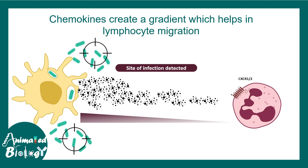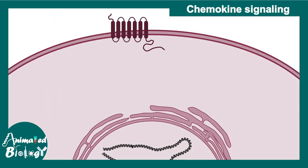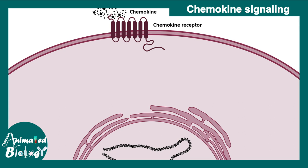But at a molecular level, how does chemokine signaling work? In order to understand, let's zoom into the neutrophil and try to understand how chemokine signaling works. The chemokine signaling starts when a chemokine binds to the chemokine receptor, which is a G protein-coupled receptor.